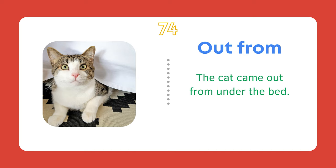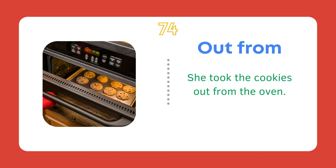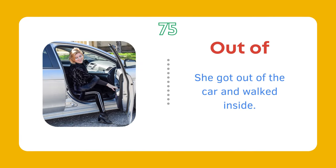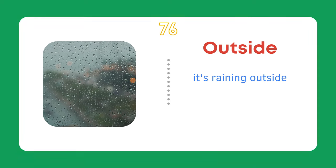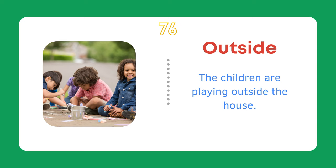Out from. The cat came out from under the bed. She took the cookies out from the oven. Out of. She got out of the car and walked inside. We are out of milk. Can you buy some? Outside. It's raining outside. The children are playing outside the house.